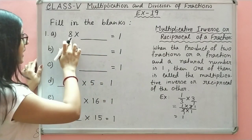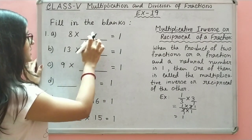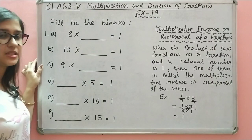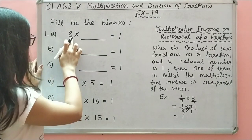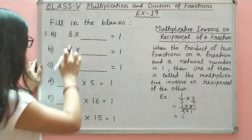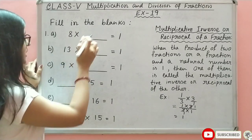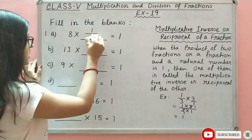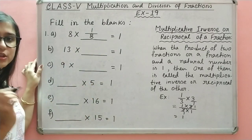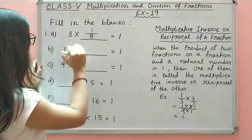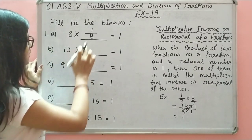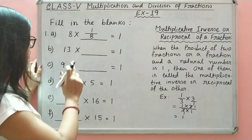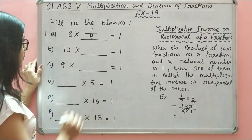Now, 8 into dash is equal to 1. The multiplicative inverse of 8, when multiplied with 8, gives 1. Since 8 has 1 in the denominator, in the multiplicative inverse the denominator comes to the numerator and becomes 1, and the numerator goes to the denominator. So it becomes 1 upon 8. So 8 into 1 upon 8, i.e., 8 over 1 into 1 over 8 — 8 cancels to give 1.